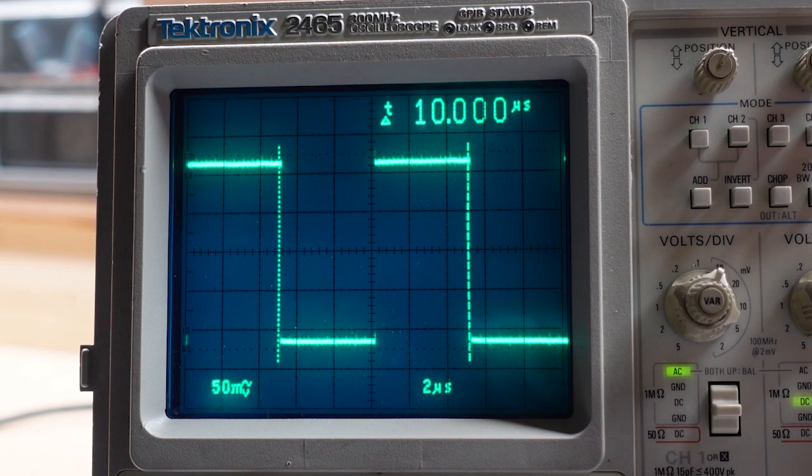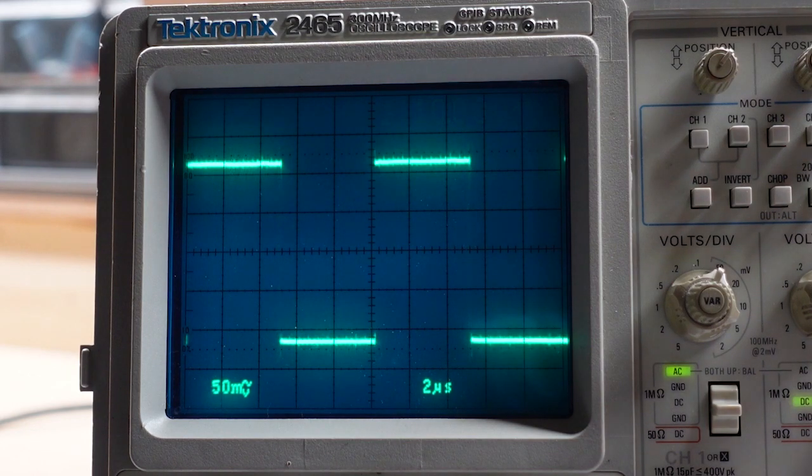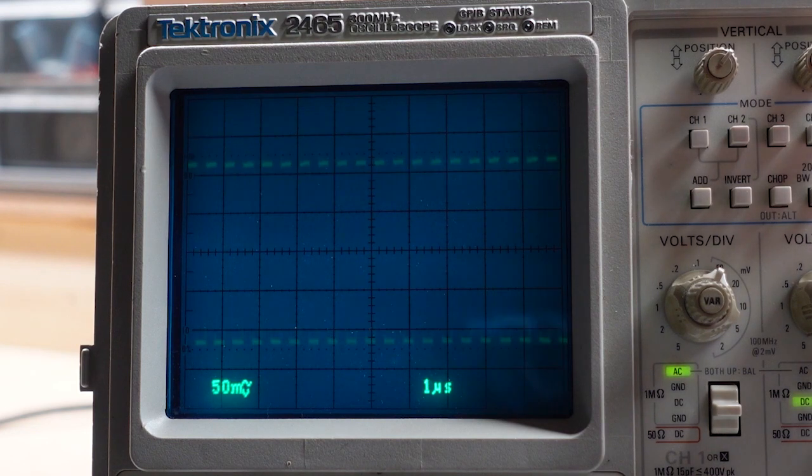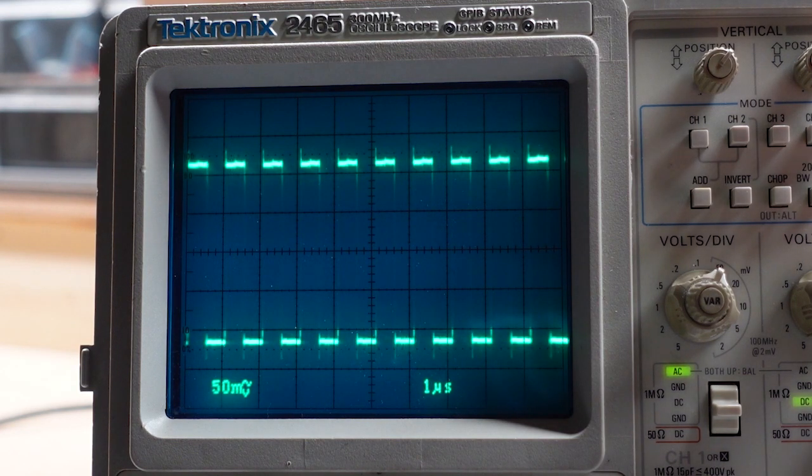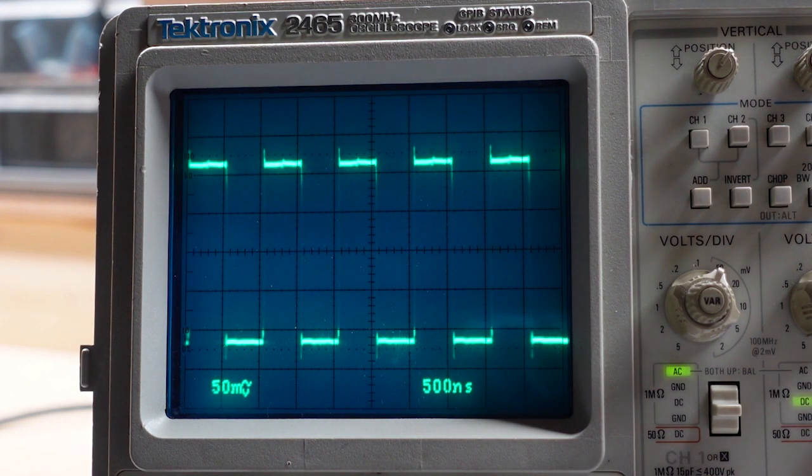There we go, 10 microseconds. Let me turn off the time indicator there. And if I go all the way to one microsecond, I can easily see that as well. One microsecond per division, 500 nanoseconds. And you can see a little bit of some overshoot there. I'm going to zoom in on that on the next shot so we can look at that as well as the rise time.